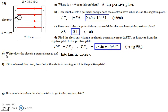How about letter E? Where does the electric potential energy go? Of course, it's going to go into kinetic energy. We can use conservation of energy — let it go, it goes where it wants to go, losing potential energy and gaining kinetic energy.